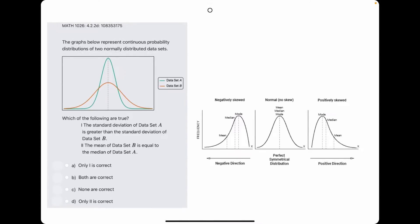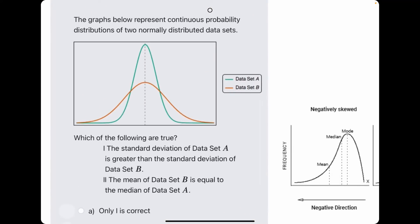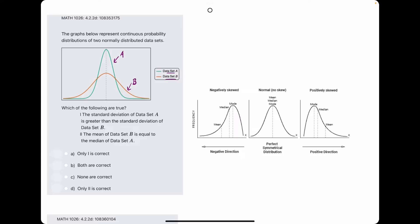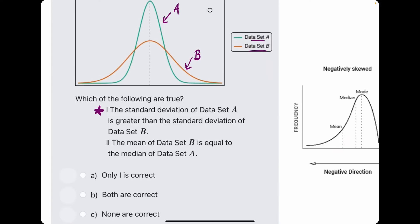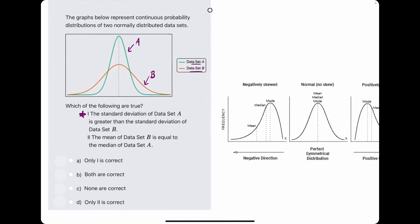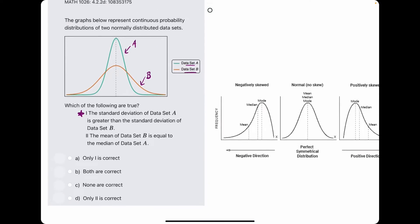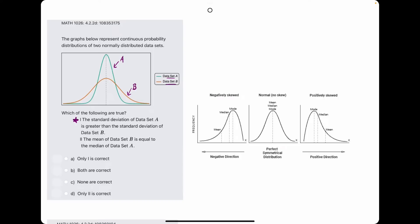In this problem, they give us a graph with the curves of two data sets, A and B. A is the green curve and B is the orange curve. They give us some statements and the goal is to identify which statements are true. Starting with number one, the standard deviation of data set A is greater than the standard deviation of data set B.